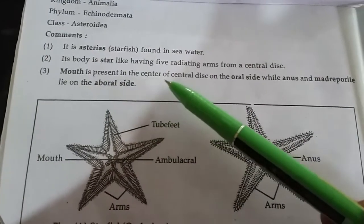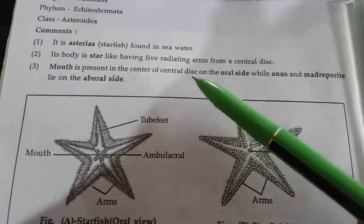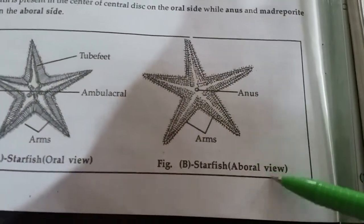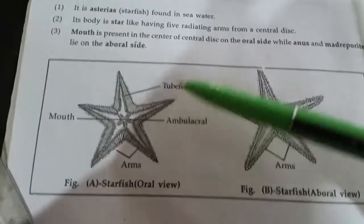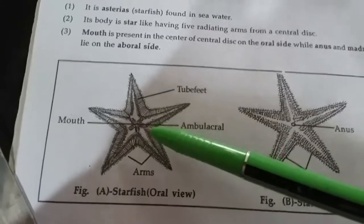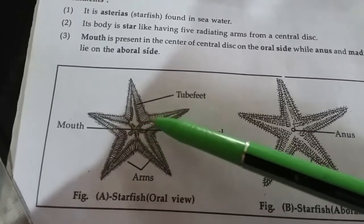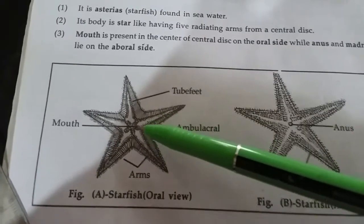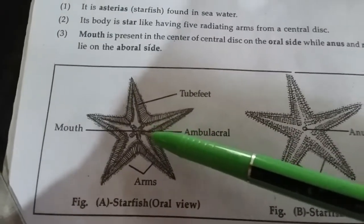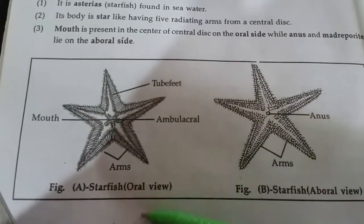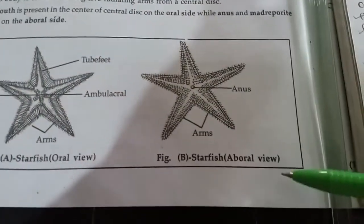The mouth is present on the central disc, on the oral side. This is its oral side and this is its aboral side — the front side and the back side. This is the mouth of the starfish at the center. This is the central disc, and from the central disc these five radiating arms arise. The mouth can be seen in the oral view, not in the aboral view.